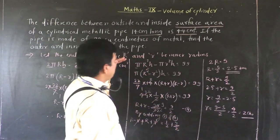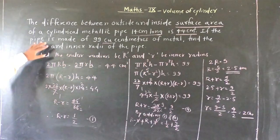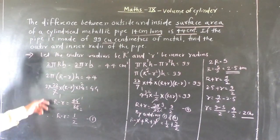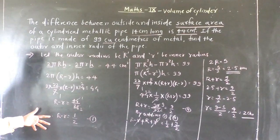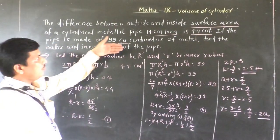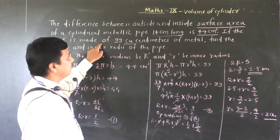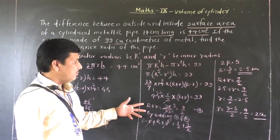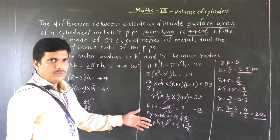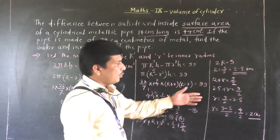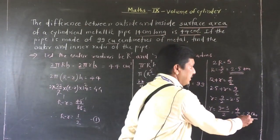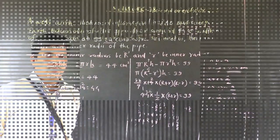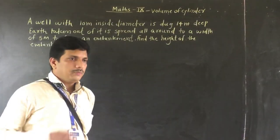So the difference was given, and with the help of the surface area difference we found R minus r (the thickness). Then with the help of the volume condition we found R plus r. Finally by adding the two equations we got capital R and small r — the inner radius is 2 cm and the outer radius is 2.5 cm. Our second problem is next.